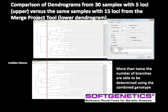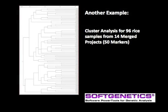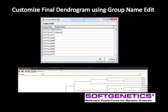Select the clustering analysis settings to customize the analysis for this application. The number of loci that may be combined is not limited by the program. In this example, 96 samples were amplified with 14 separate PCR reactions — 14 multiplexes — for a combined total of 50 markers used in GeneMarker's cluster analysis. The group name editor allows customization to replace file names with a descriptive name for the final print or publication figure.